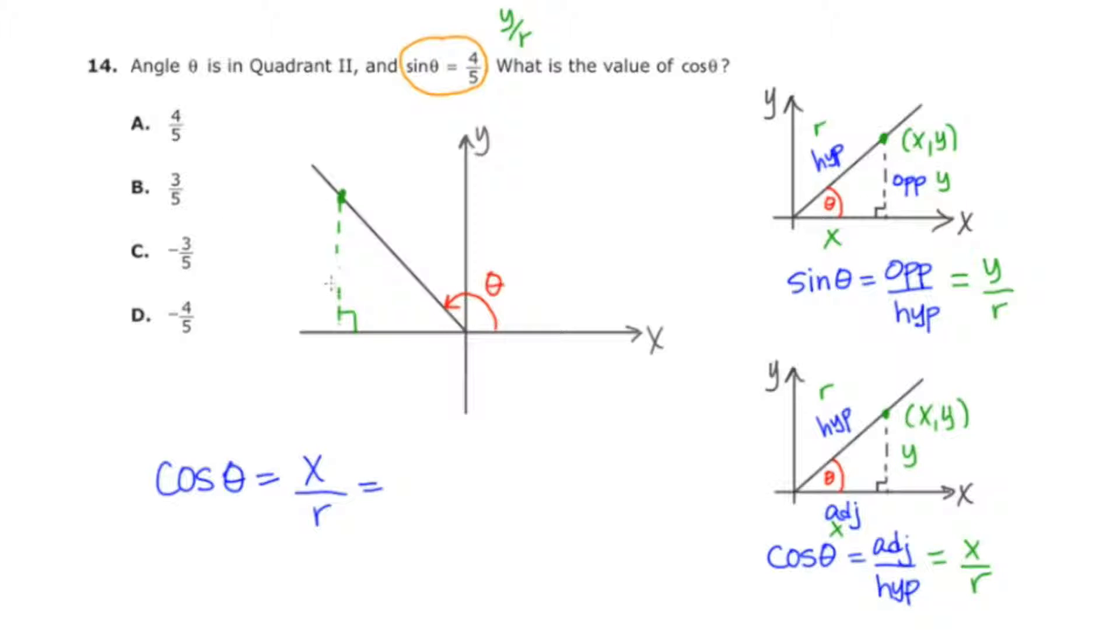The y is the up and down piece, which would be 4. And the r is going to be the radius or the hypotenuse, which is 5.